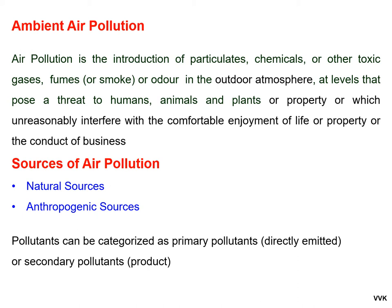Ambient air pollution occurs due to the introduction of particulates, chemicals, other toxic gases, fumes, smoke, or odour in the outdoor atmosphere at levels that pose a threat to humans, animals, plants, or property. There are mainly anthropogenic as well as natural sources responsible for air pollution, which can be categorized as primary pollutants when directly emitted from sources, and secondary pollutants which form upon reaction in the atmosphere.